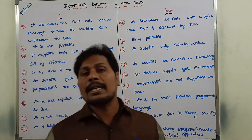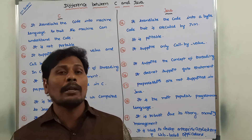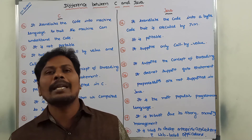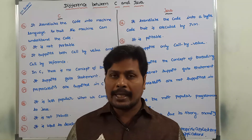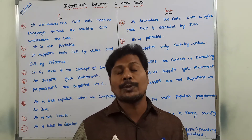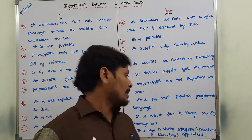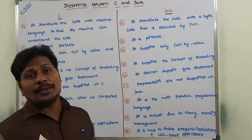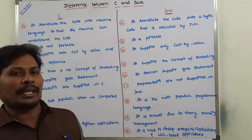Next: C language is used for developing system programs and also developing operating systems. By using C language we write system programs and develop operating systems. Whereas Java is used to develop enterprise applications and web-based applications.